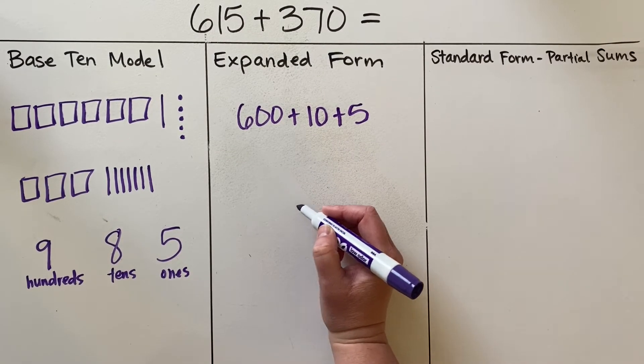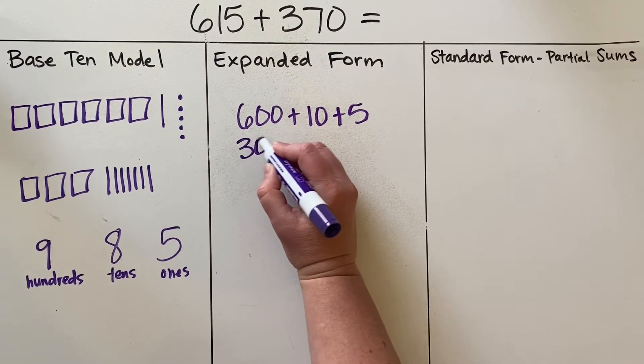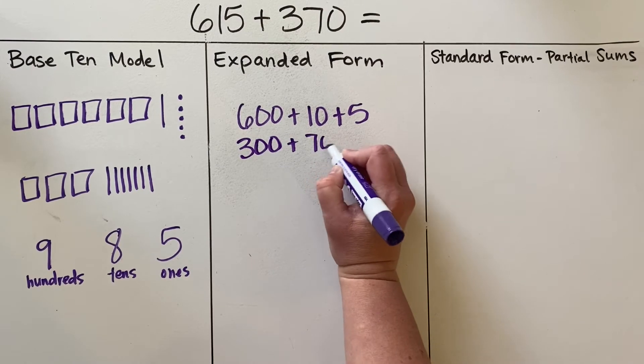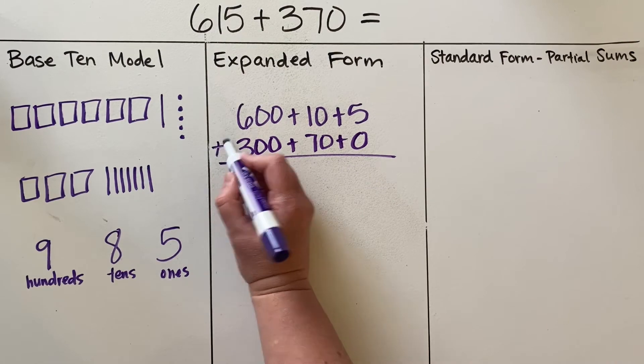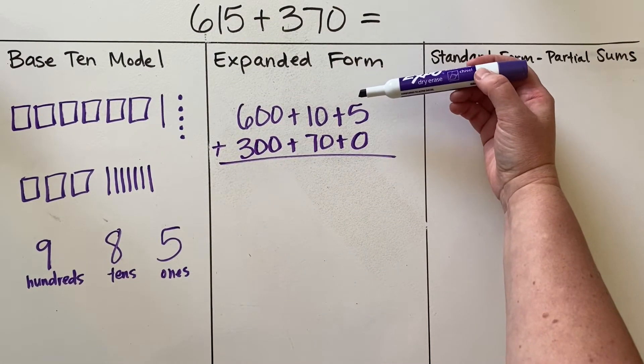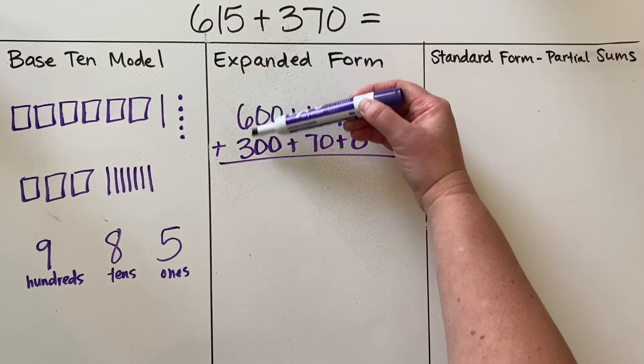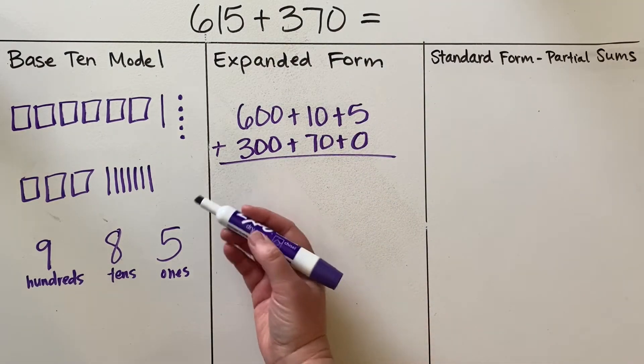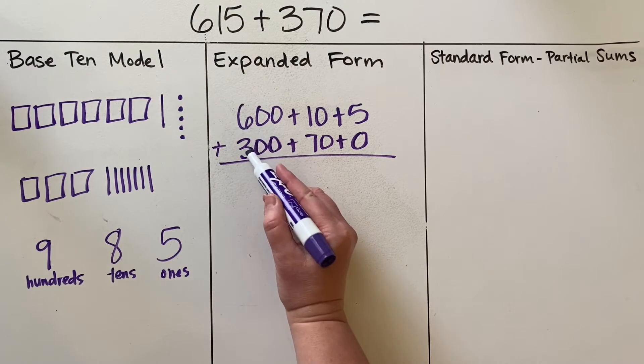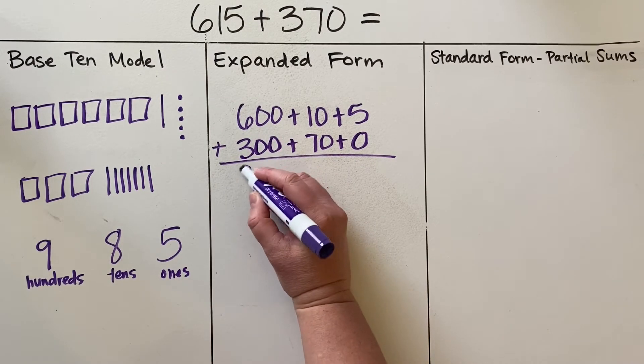And we are adding three hundred seventy, so that would be 300 plus 70 plus 0, as there's nothing in the ones place for that number. Making sure that everything is lined up nicely by place value—so here's all my hundreds, here's all my tens, here's all my ones. I'm going to go through and do the same thing of adding up each of those place values.